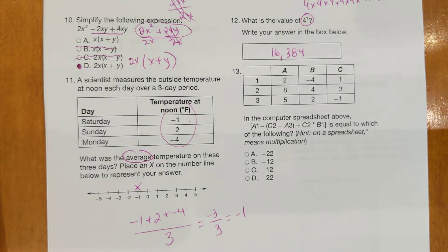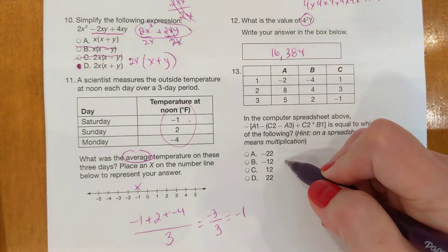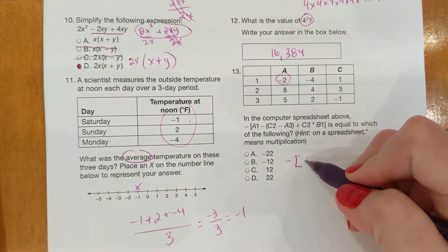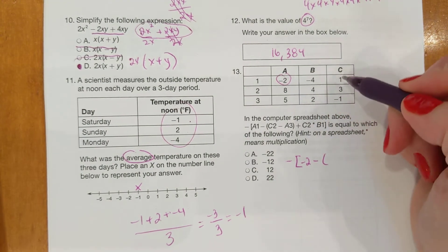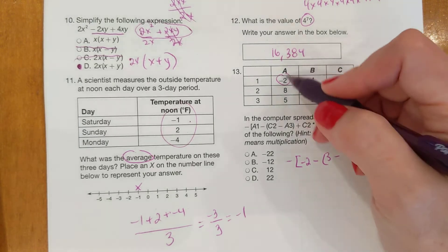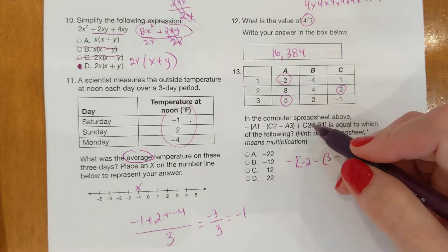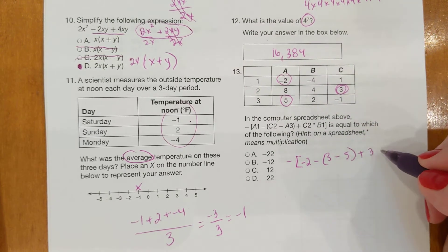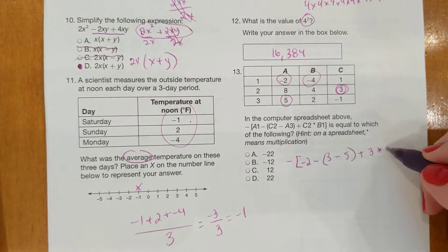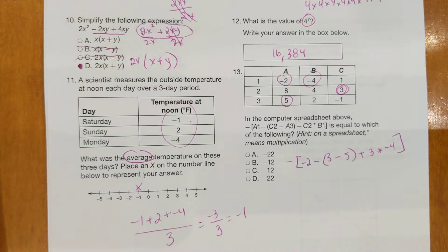Number 13. In the computer spreadsheet above, negative A1 minus C2 minus A3 plus C2 times B1 is equal to which of the following? Hint, on a spreadsheet, the asterisk means multiplication. Okay, so we're going to fill things in here. A1 is negative 2, minus C2 which was 3, minus A3 which is 5, plus C2 which again was 3, times B1 which is negative 4. We are not going to waste our time trying to do PEMDAS on it. We're going to put it in the calculator. No, the calculator does not have brackets but it has parentheses. So where you see a bracket, just put parentheses because a parentheses and a bracket are the same thing.